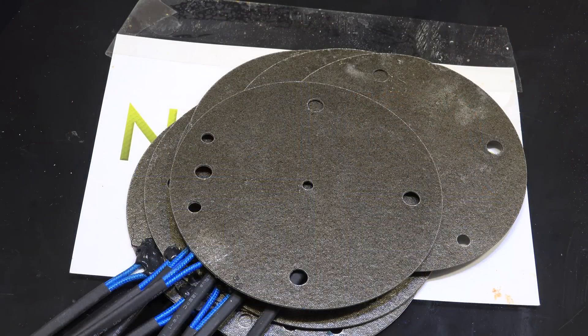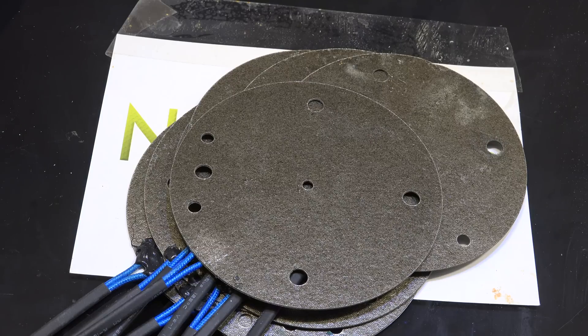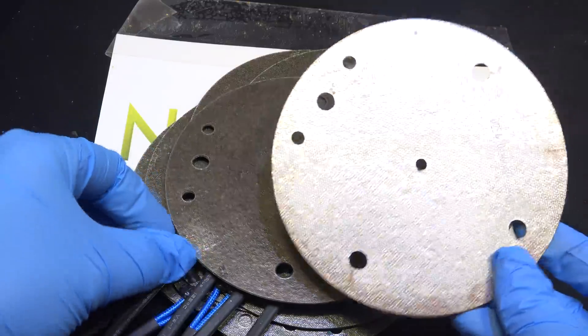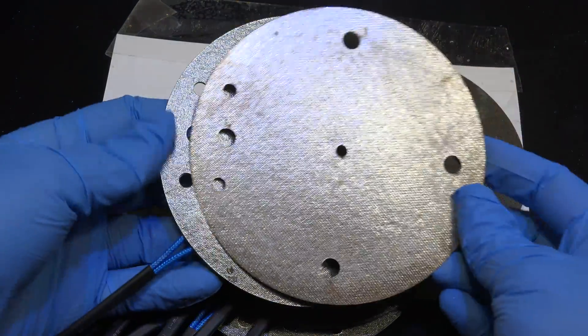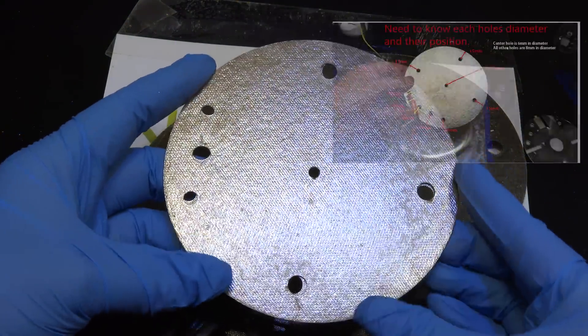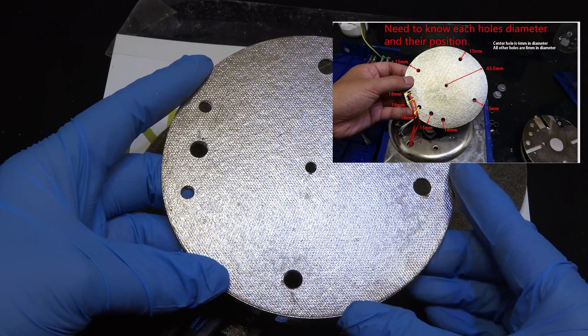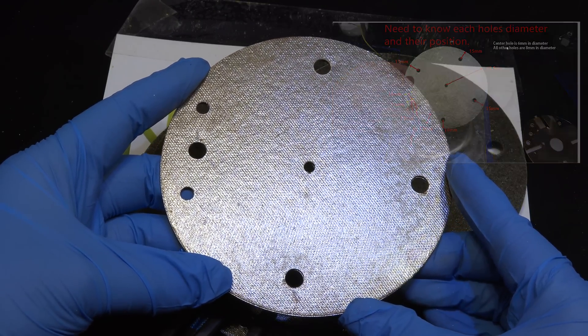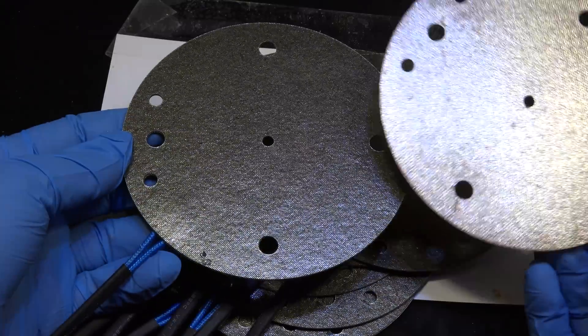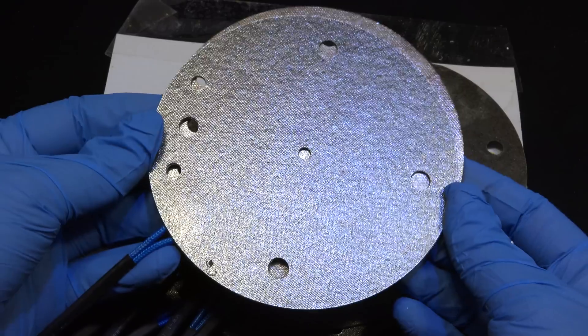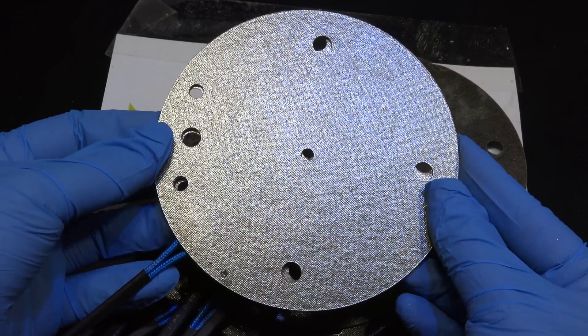But I'm getting ahead of myself. Let's get these installed and tested. Interestingly enough these holes match up perfectly with the elements they are replacing. Either the crude measuring picture I sent them of my burnt element was enough for perfect duplication, or this particular size and hole placement is pretty common and the company had the tooling and assembly line already on hand.